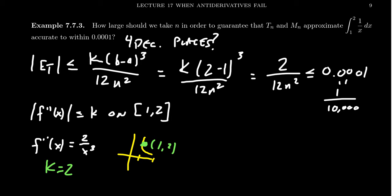And so we want to solve this inequality for n. So what we can do is we can take reciprocals, flip this thing upside down. We're going to get 12n squared over 2 is going to be greater than or equal to 10,000. Now, notice that as I took the reciprocal, the order of the inequality gets swapped around.